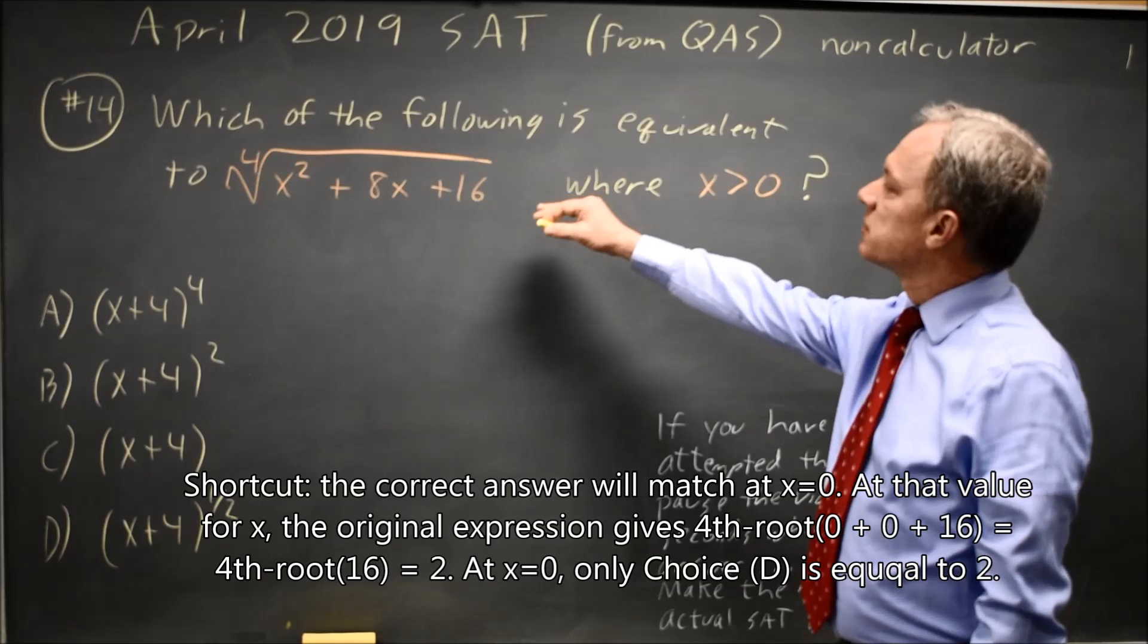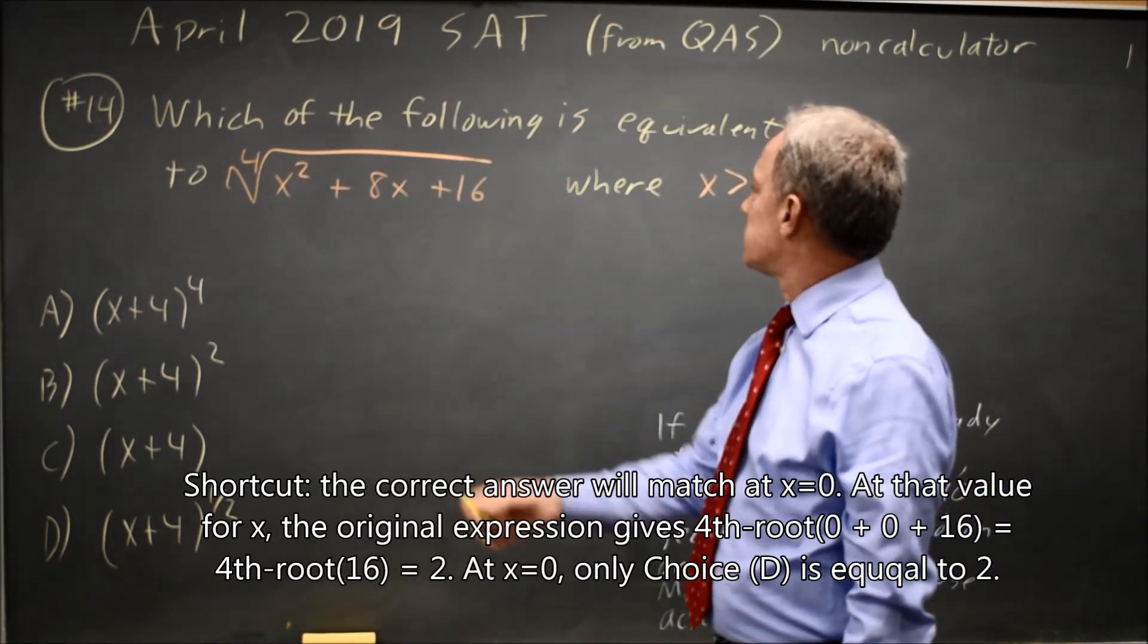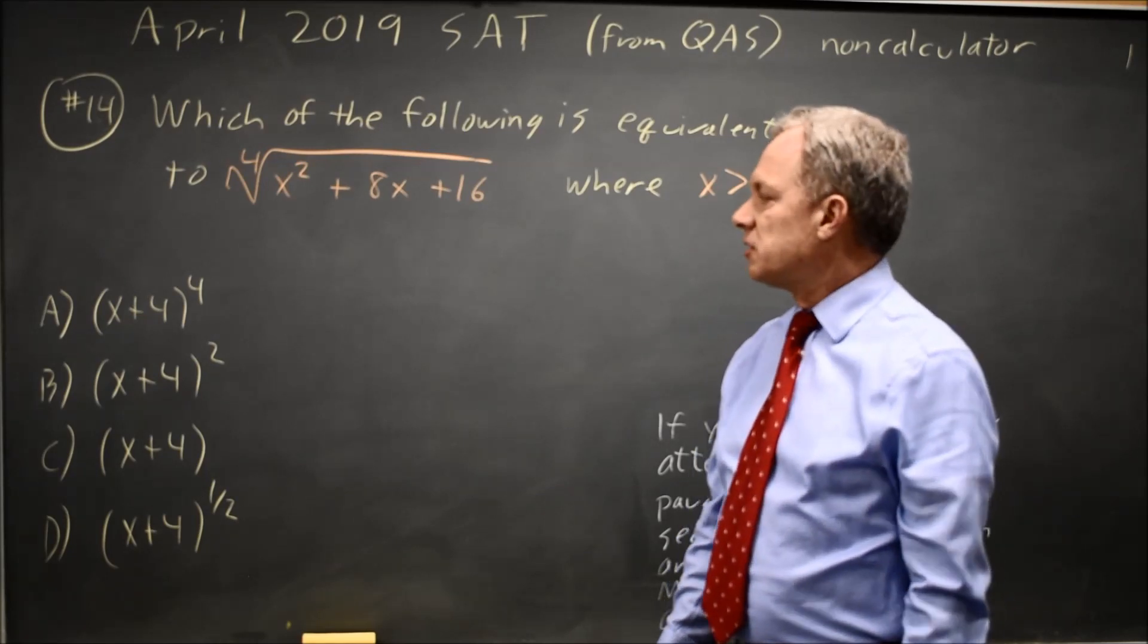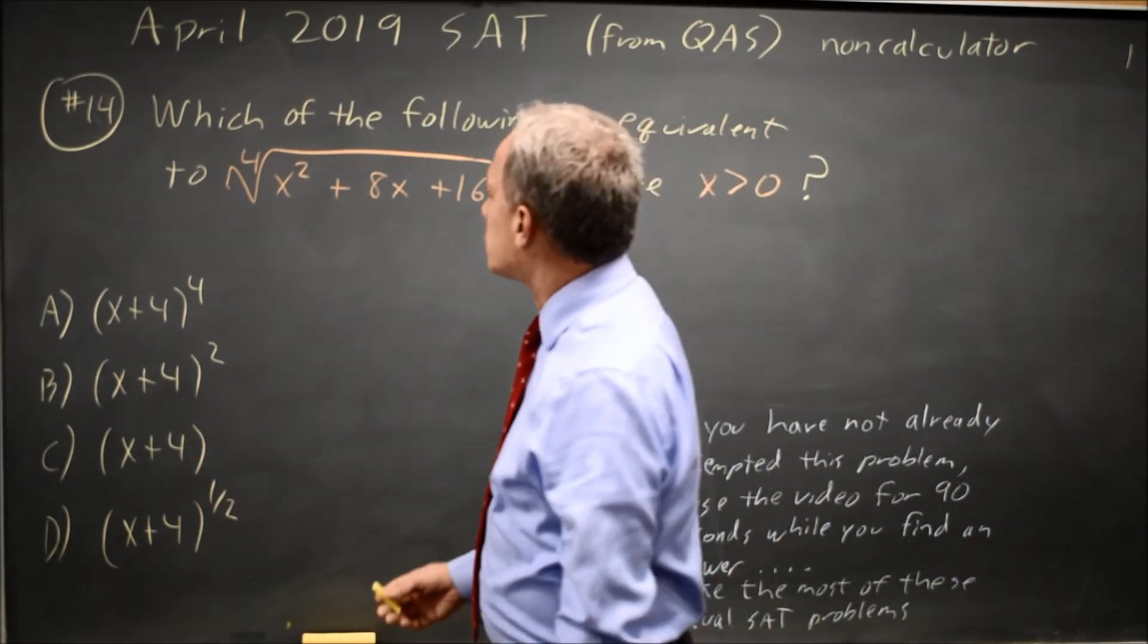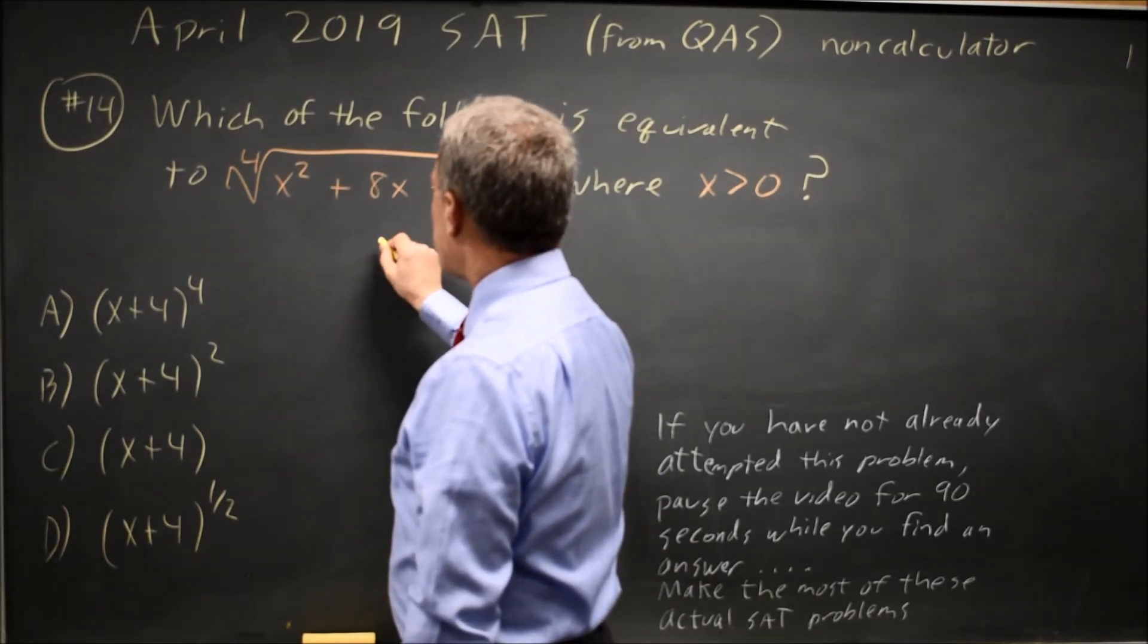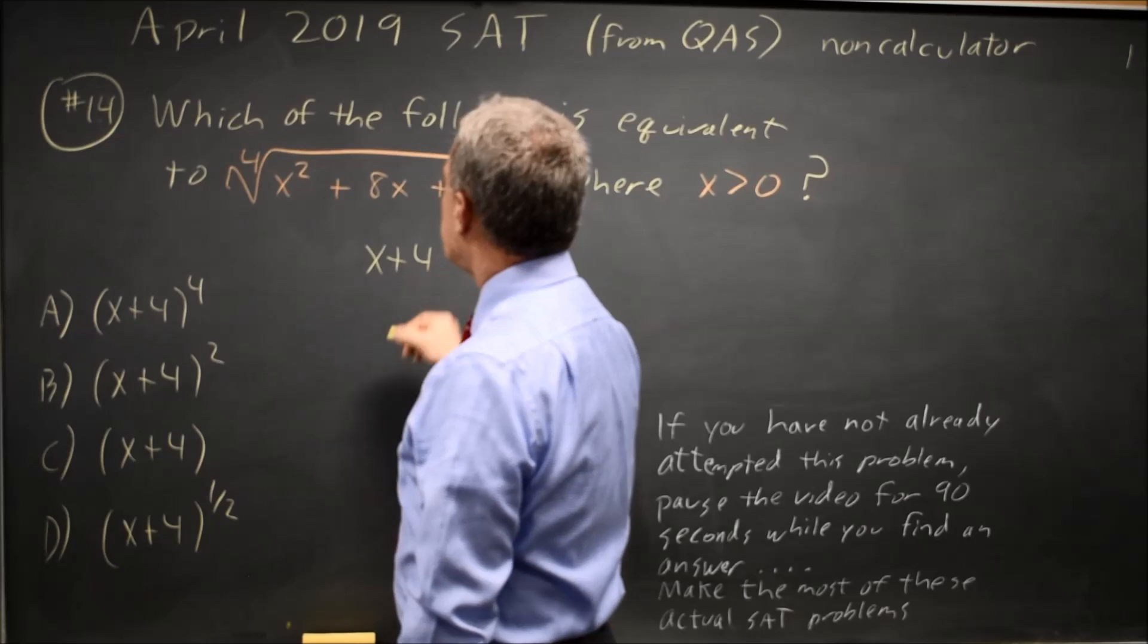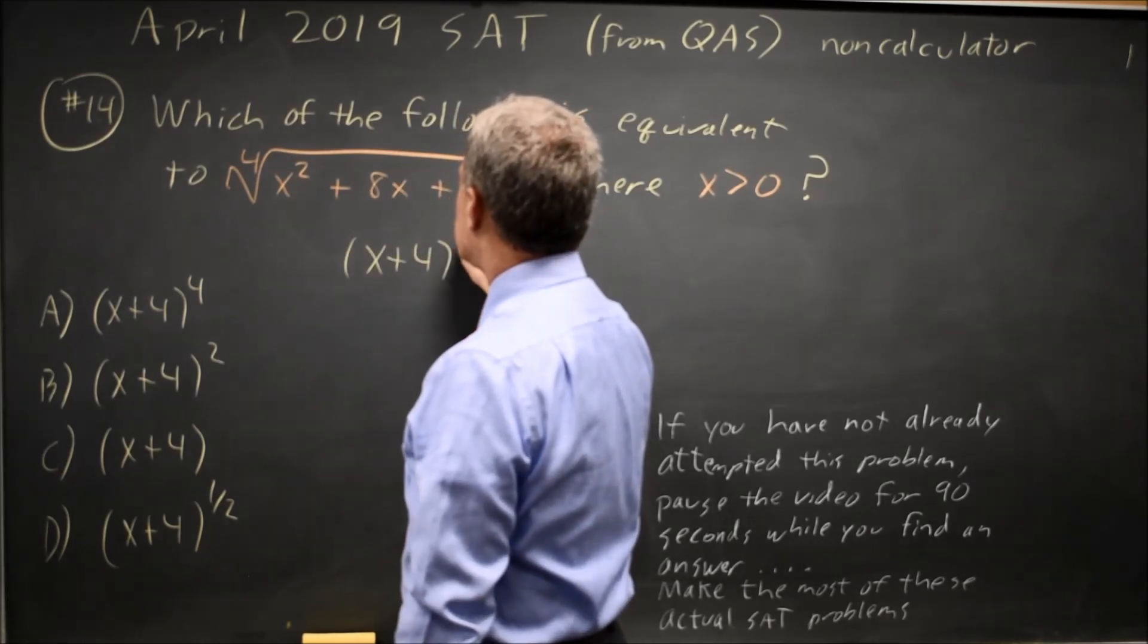In this case, College Board gives us a radical expression and asks which of these choices is equivalent for x greater than zero. You'll notice all choices are of some power of x plus four, so we expect this to factor as some x plus four expression, and in fact, x squared plus 8x plus 16 is x plus four squared.